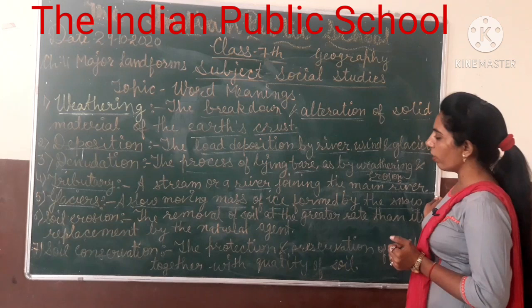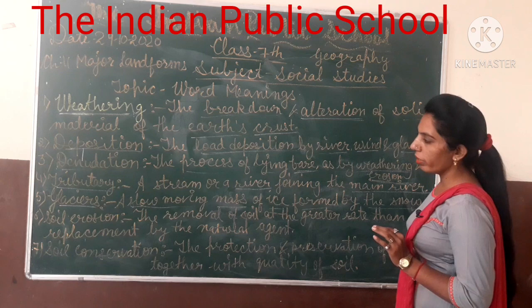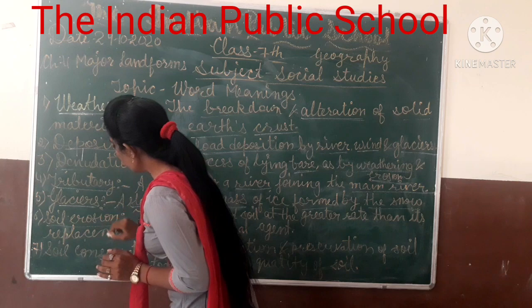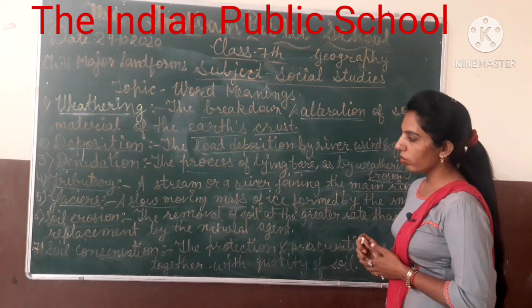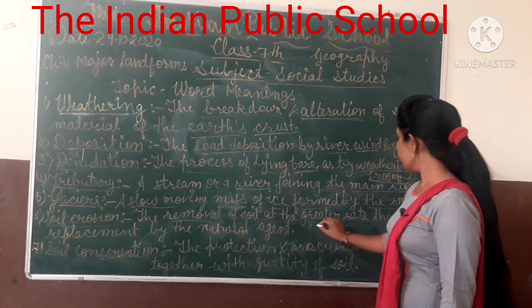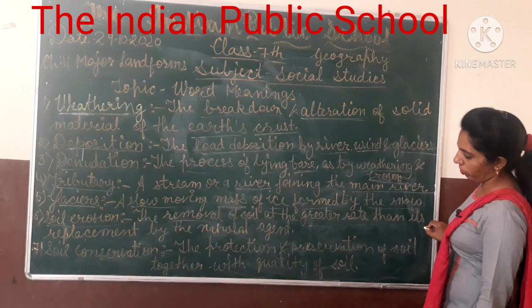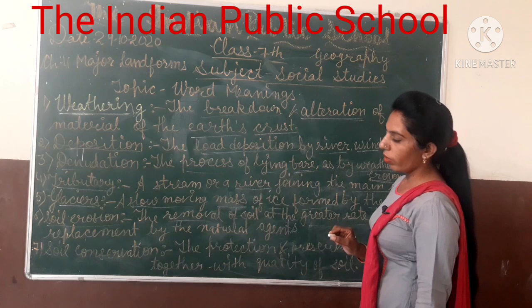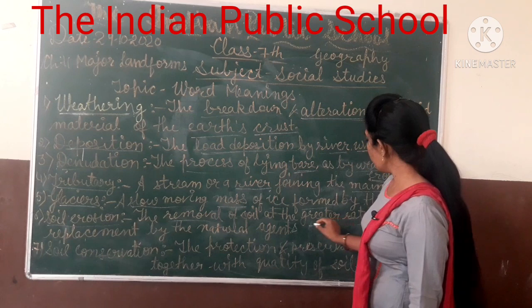Sixth is soil erosion. Soil erosion is the removal of soil at a greater rate than its replacement by natural agents. This movement can be fast. Wind can also cause it. Flood can also cause it. When the removal rate of soil is high, we call it soil erosion.